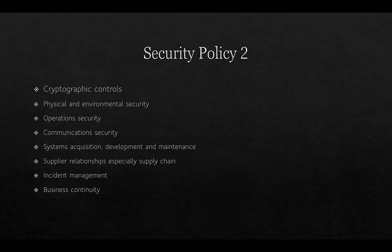Further in the security policy it will outline the use of cryptographic controls, the use of encryption of devices and/or documents especially when transmitting information or information at risk, physical and environmental security covering security of rooms, offices and buildings, and how you protect against adverse events. It also covers operational security, communication security, the process by which new systems are acquired, evaluated, developed and maintained, how you maintain relationships with suppliers and the supply chain, dealing with incident management, and finally business continuity.